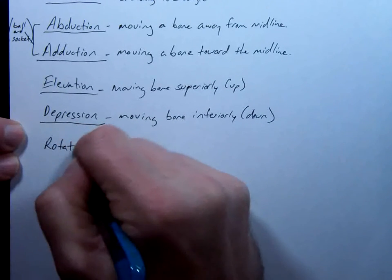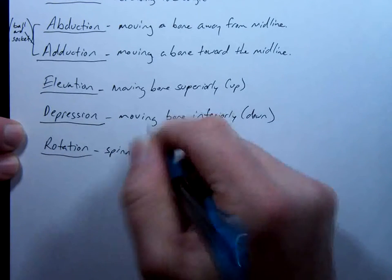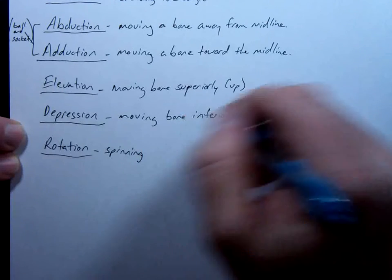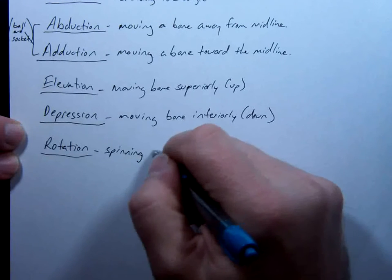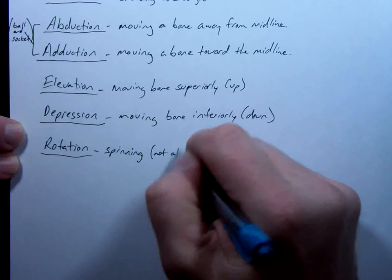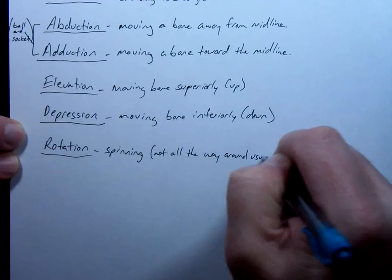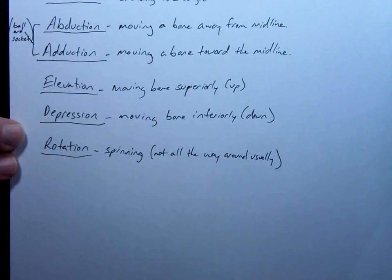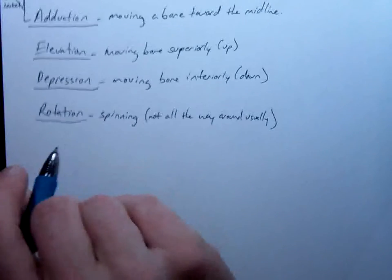Rotation. It's really spinning, but not necessarily all the way around. Spinning. Because your shoulder technically rotates, but so does your C1 and your C2. You don't want C1 and C2 to rotate all the way around, otherwise your neck would snap. Next. Last two are kind of weird and very specific.